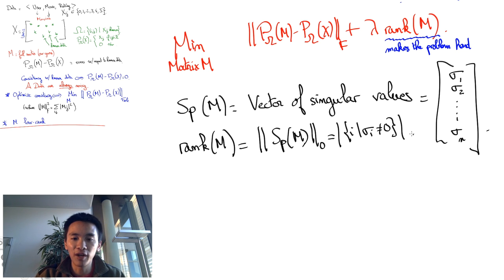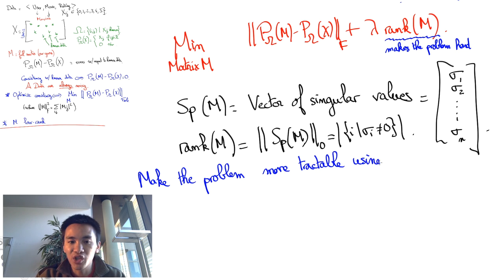To be more precise, the rank of the matrix is the number of non-zero singular values of M, which is sometimes called the zero norm of the vector of singular values, even though the zero norm is not actually a norm. What we'll do is to replace the zero norm of the vector of singular values by a one norm which is much more tractable computationally. This is not so different from the lasso regression where the one norm of the coefficients of the linear regression is penalized, even though what we would actually kind of like to minimize is rather the zero norm of these coefficients.